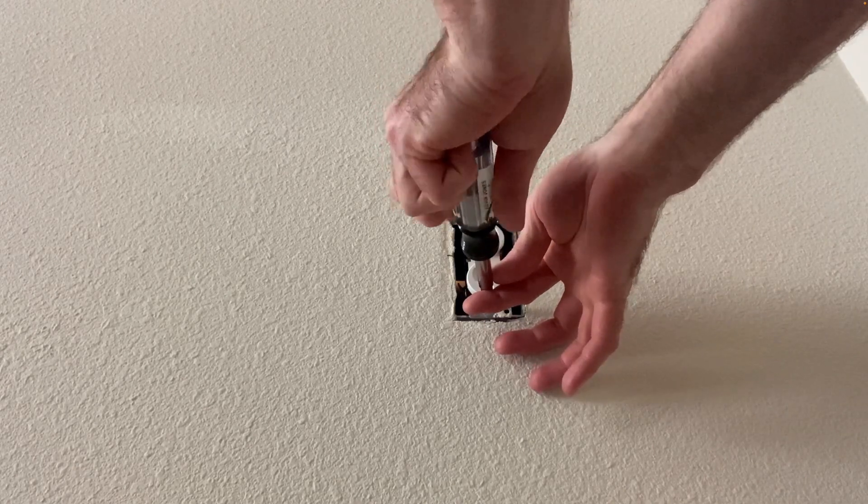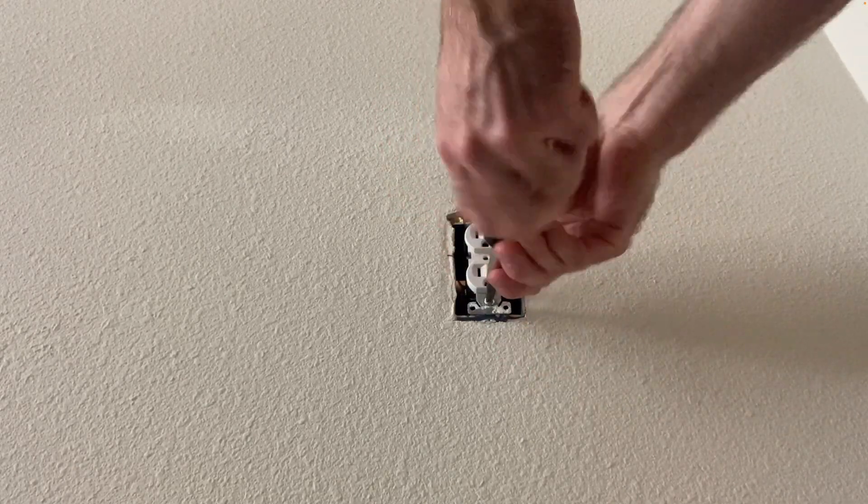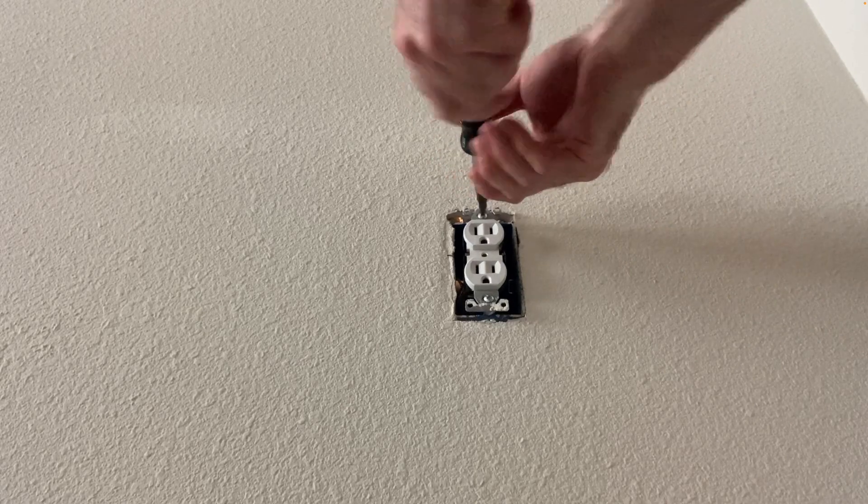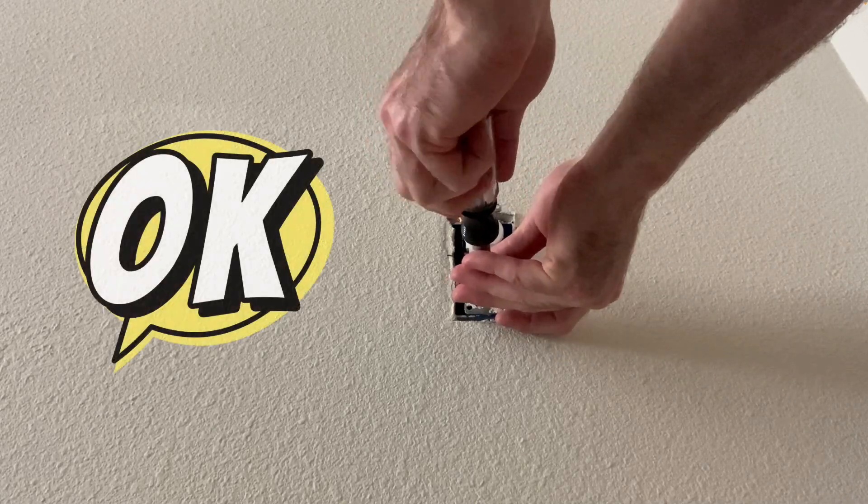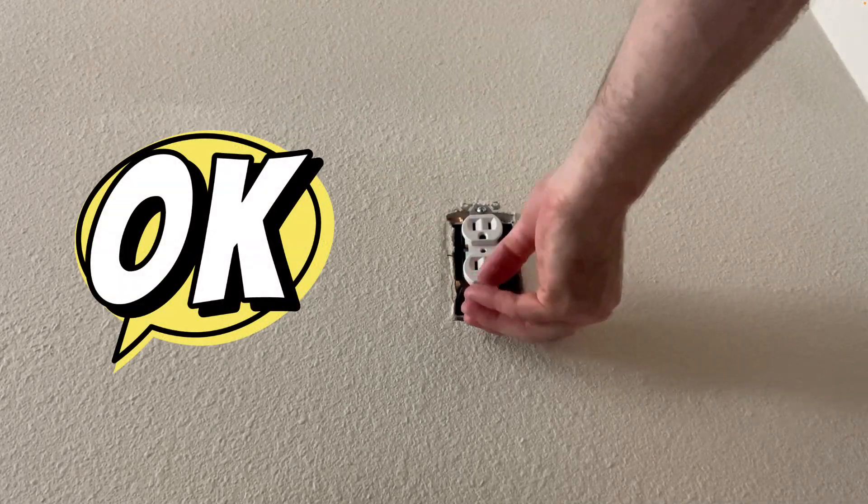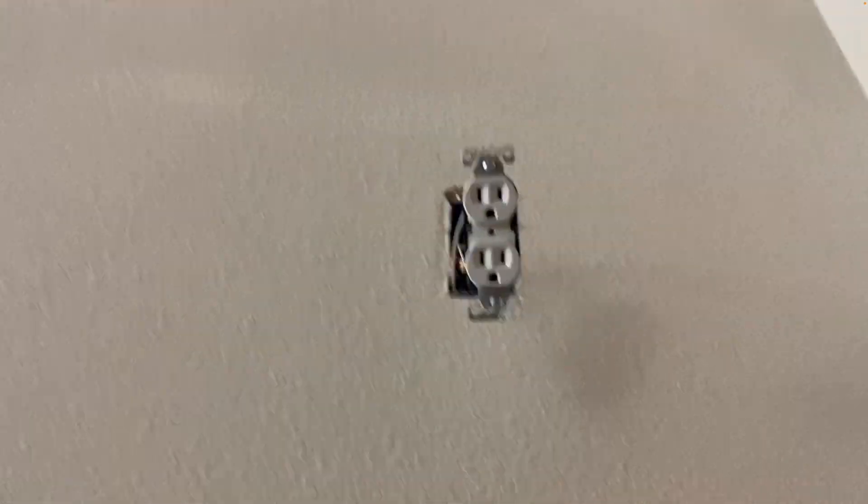We'll go ahead and remove this existing outlet. The new outlet is going to be installed on the other side of this wall. This is in a downstairs finished basement; on the other side of this wall is a workbench that needs an outlet.